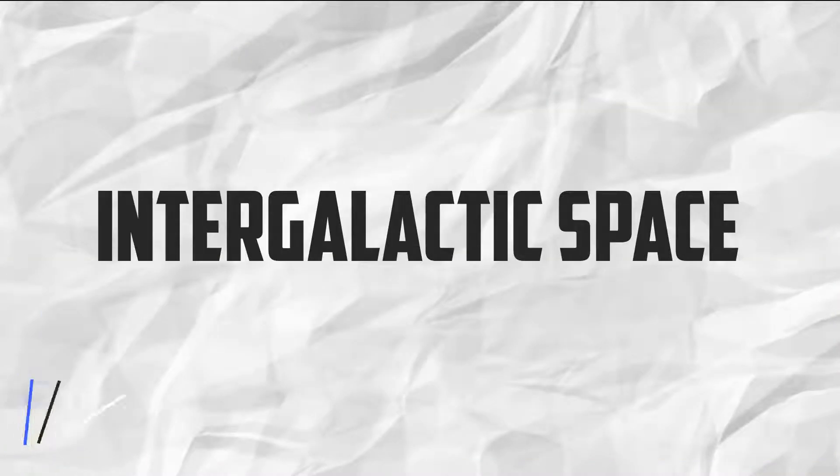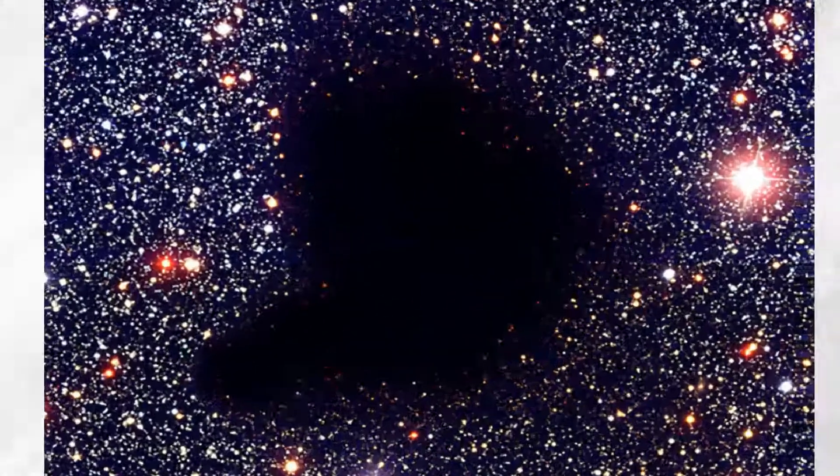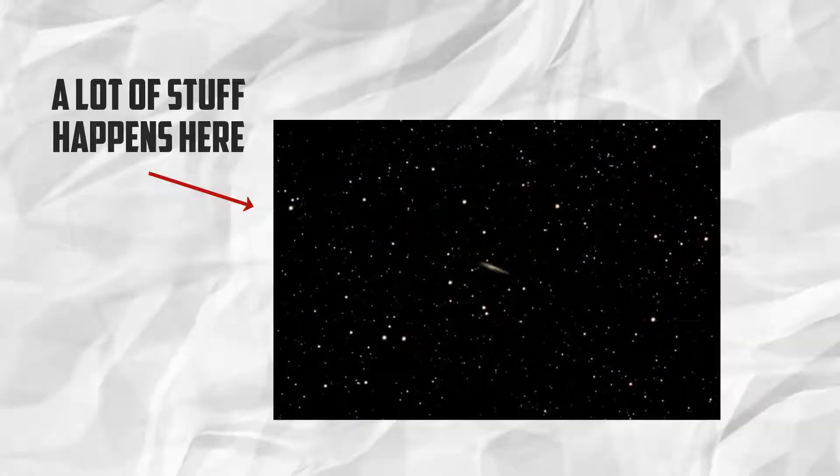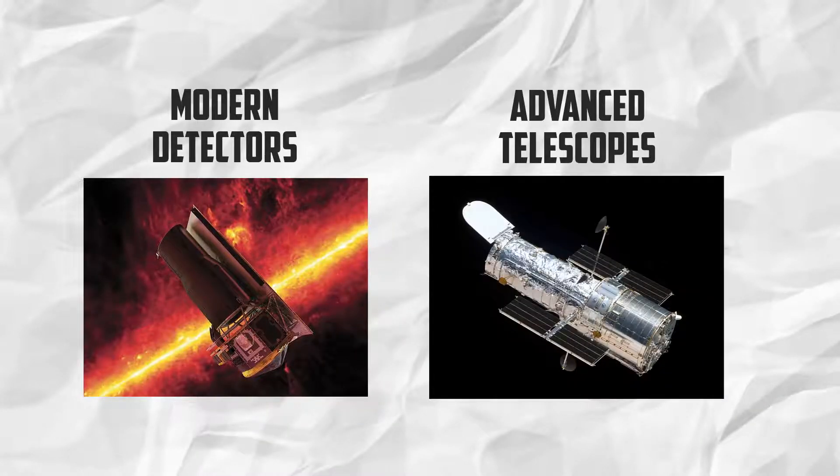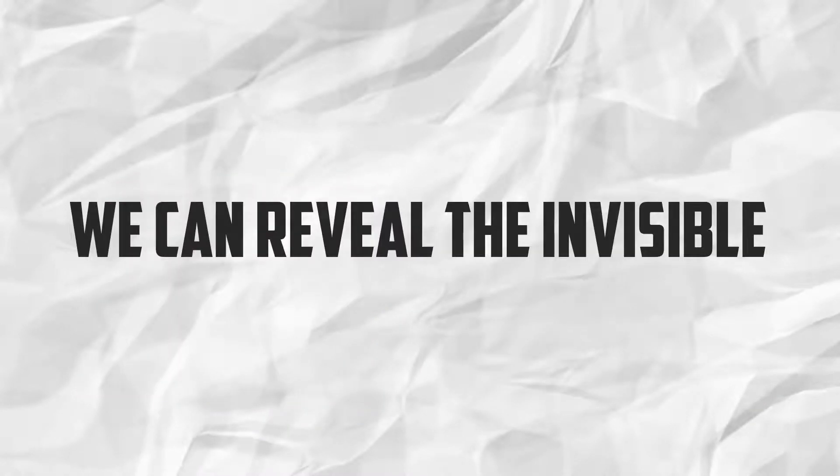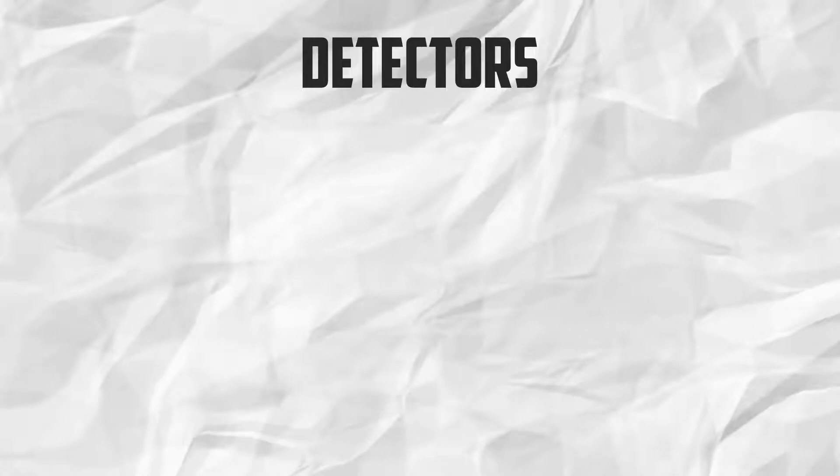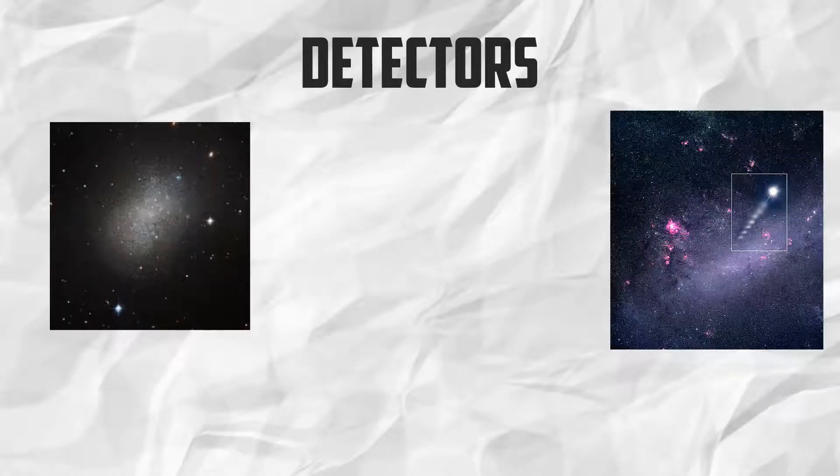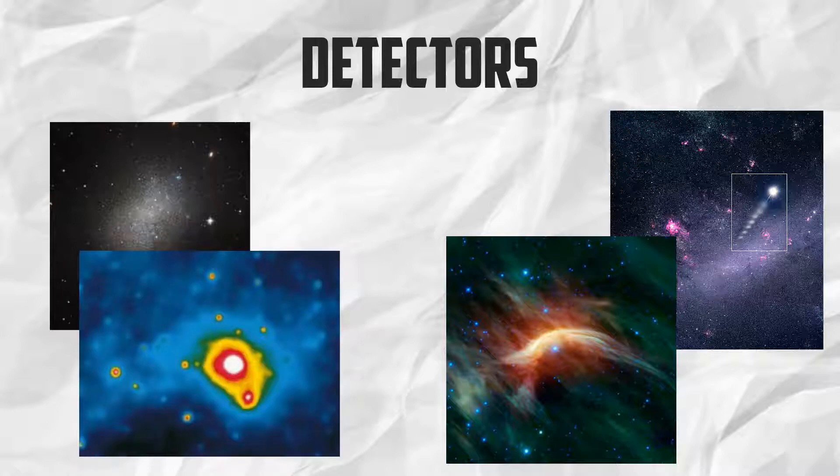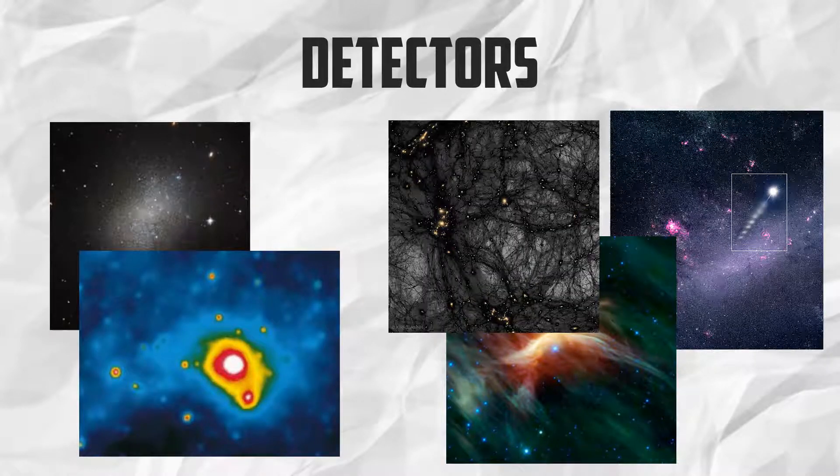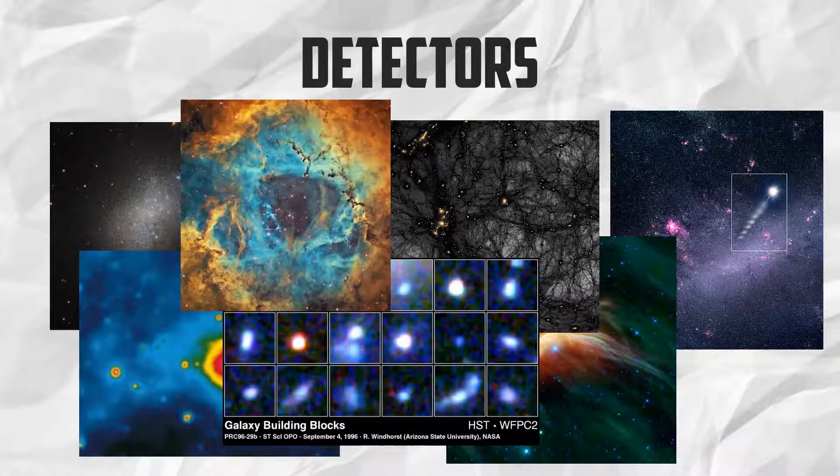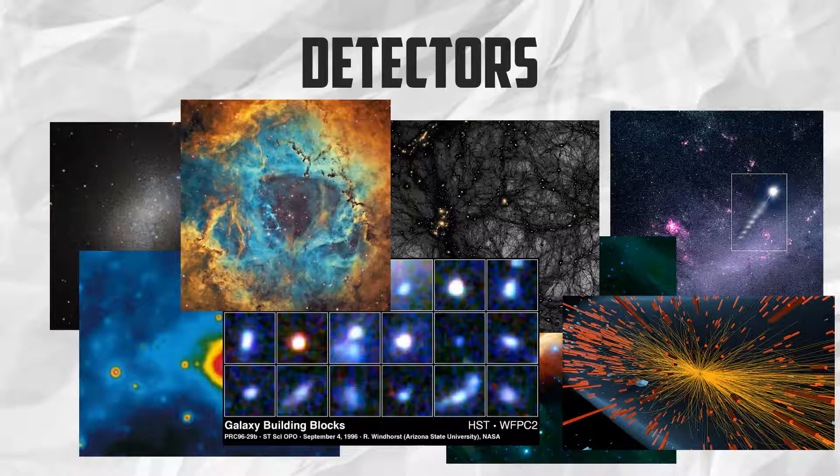Chapter 4, Intergalactic Space. Even though the empty void between galaxies may seem like a whole bunch of nothingness, there's a whole lot more happening than you think. Because of our modern detectors and advanced telescopes, we can reveal the invisible. With the detectors, we could find dwarf galaxies, runaway stars, runaway stars that explode, X-ray emitting gas, dark matter, faint blue galaxies, gas clouds, high energy charged particles, and even dark energy.